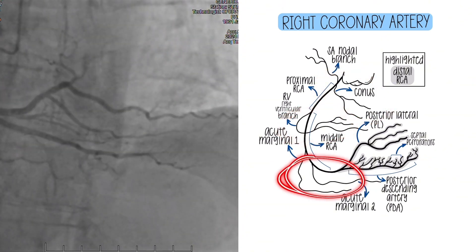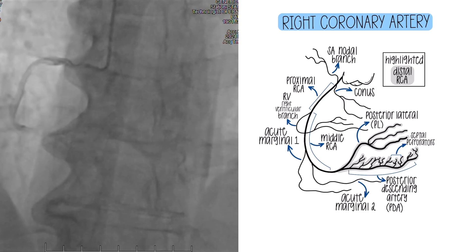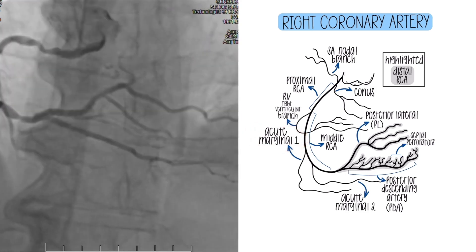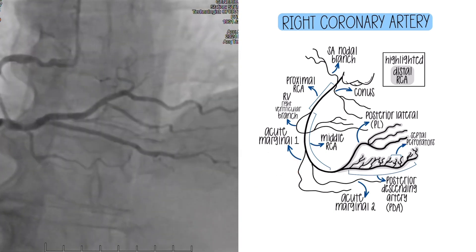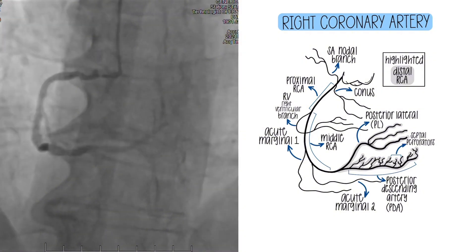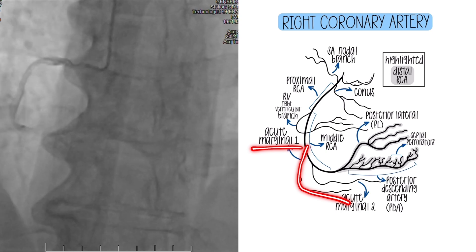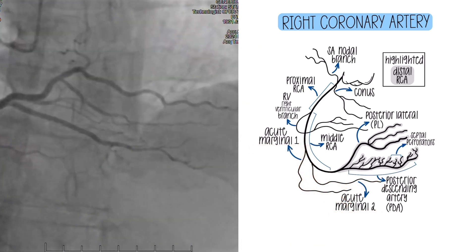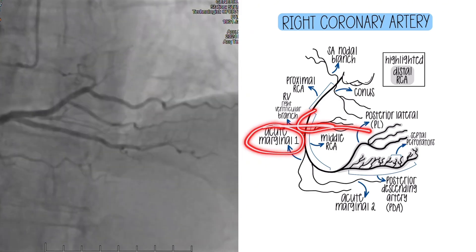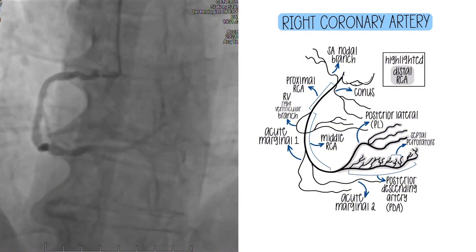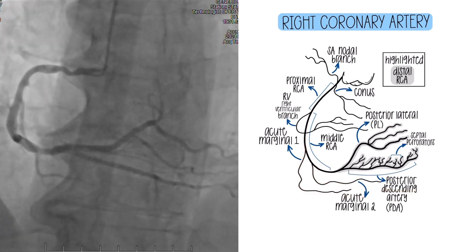Then you'll have another branch more in the distal segment — that is, or are, because you can have more than one — the acute marginals, or AMs, abbreviated AM1, AM2, AM3. The same idea as the diagonals for the LAD: you number them based on what came off first. So the first branch is acute marginal one, the second is acute marginal two. The key difference is the acute marginals come after the RV branch, and you'll see that the RV branch takes a more tortuous turn, whereas the acute marginals round out at the bottom of the RCA.